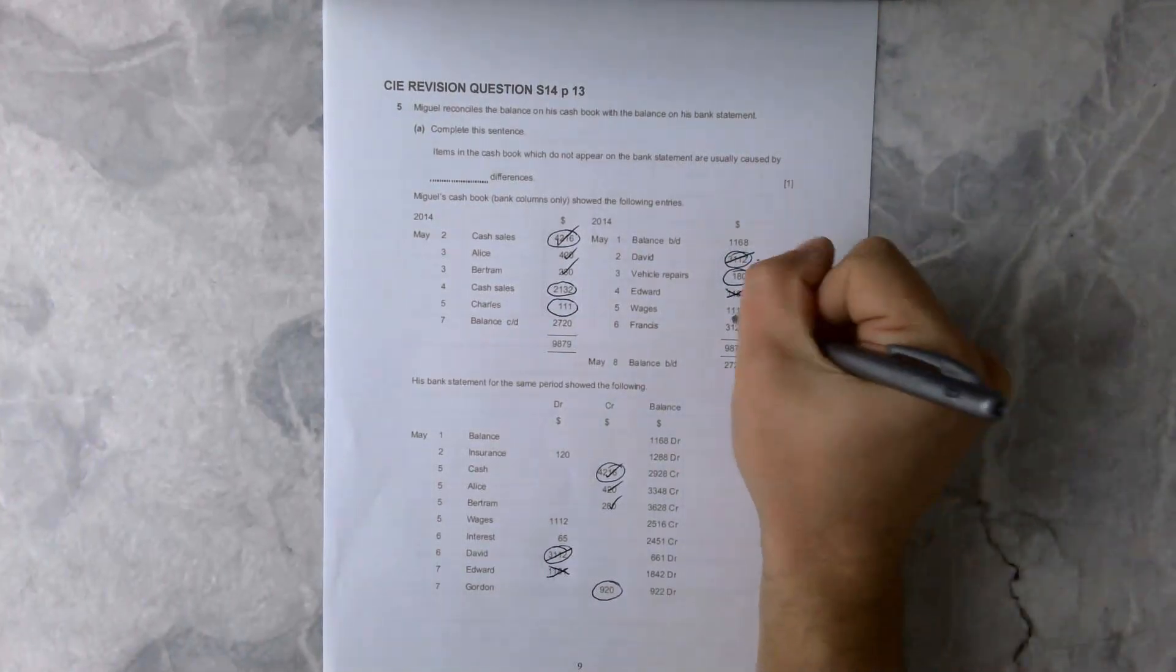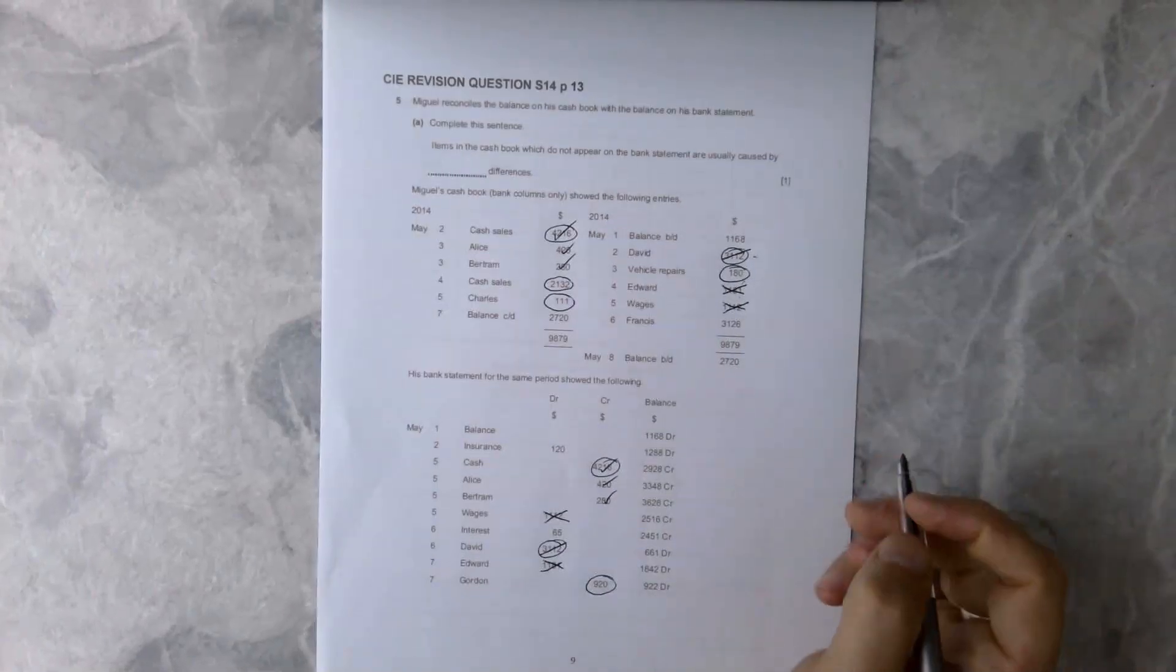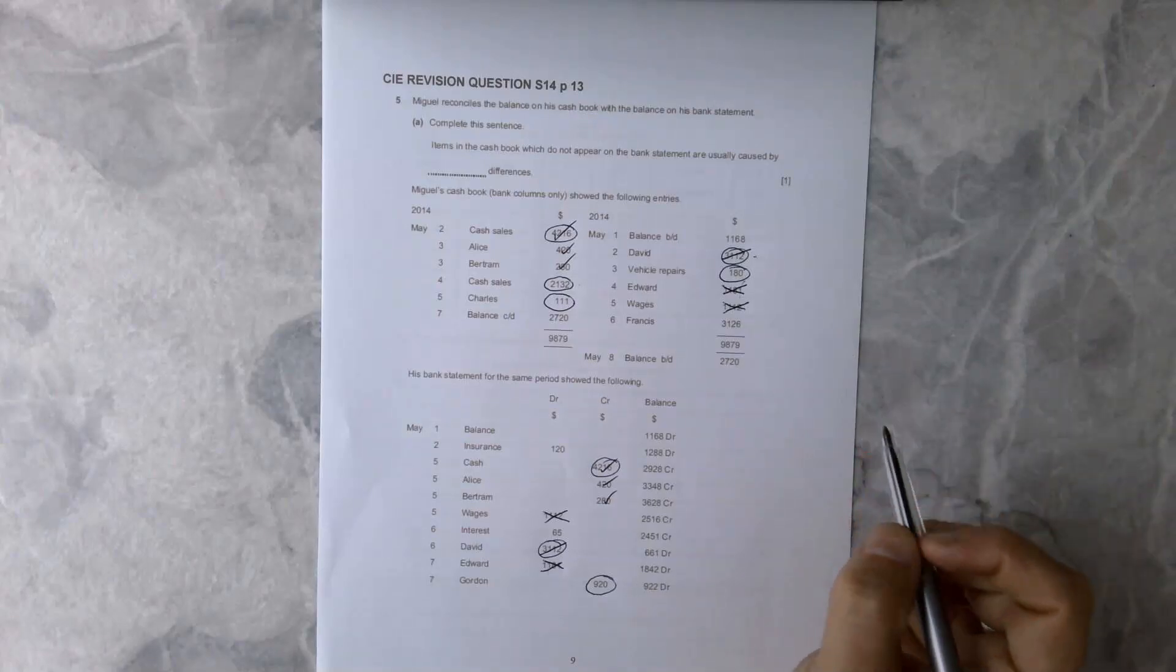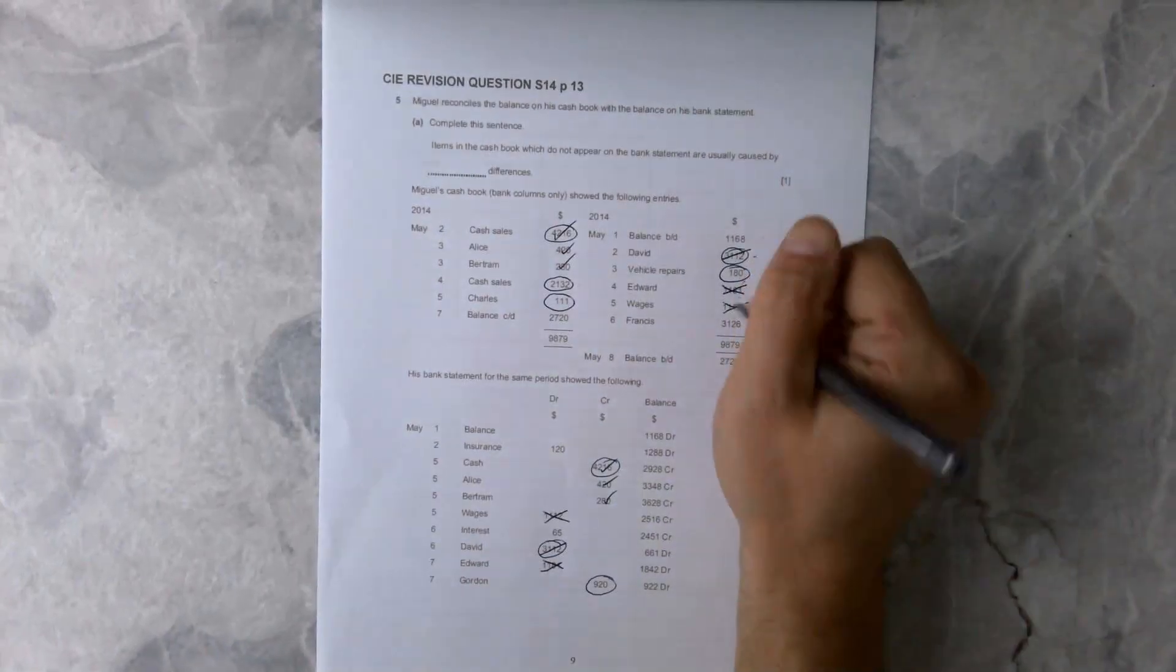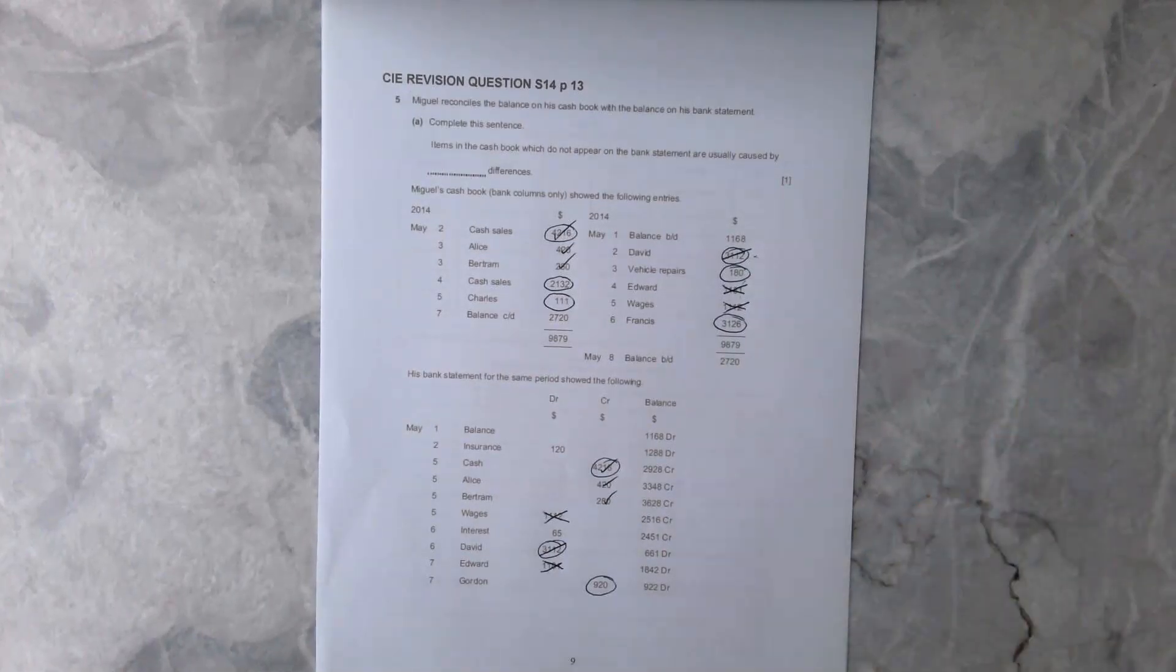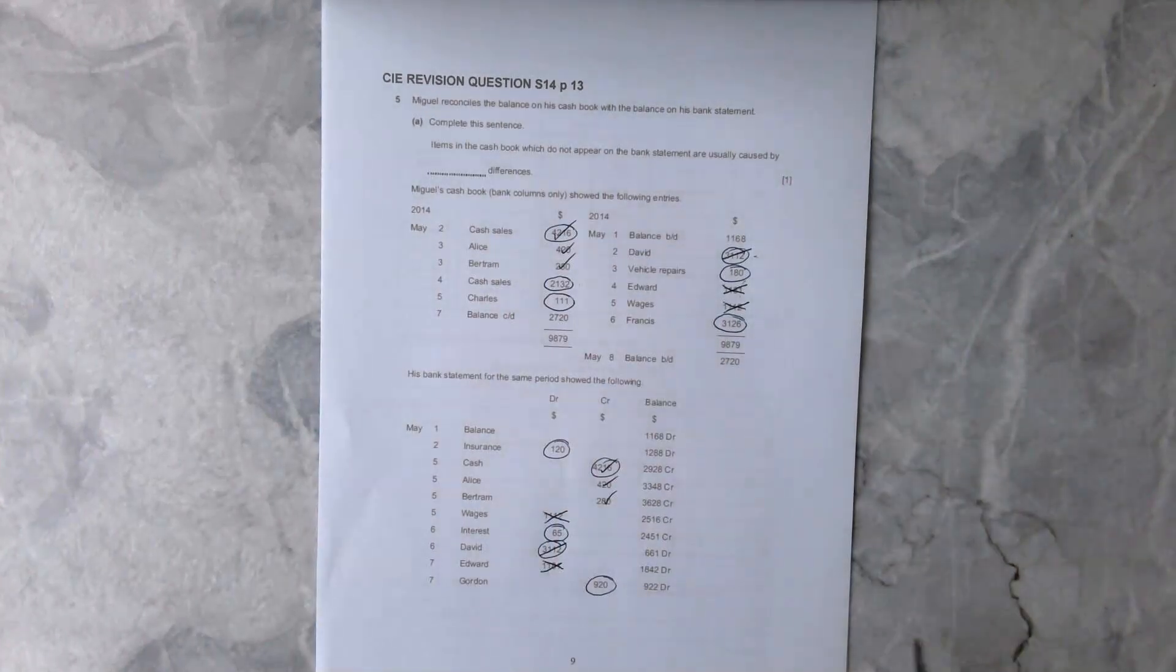Edward 1181, we can see 1181 here, so we're going to cross that one off. Wages again 1112, 1112 is there. Francis at 3126 is not there so we're going to circle that.